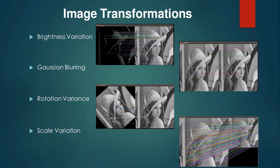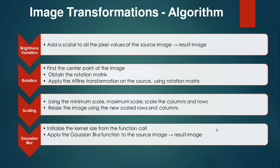To evaluate these algorithms, instead of using a pre-existing dataset, I created my own dataset by applying image transformations on a standard test image of Lena. The different transformations applied are brightness variation, Gaussian blurring, rotation variance, and scale variation.